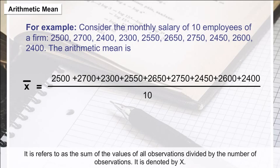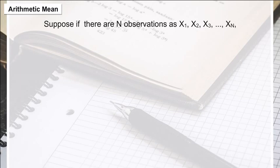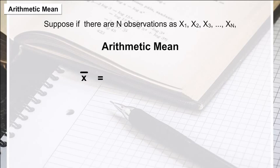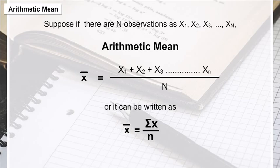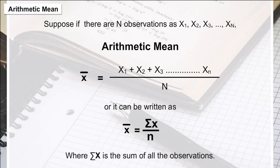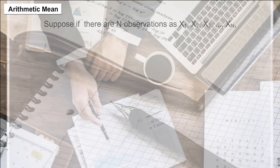Arithmetic mean refers to the sum of the values of all observations divided by the number of observations. It is denoted by x-bar. If there are n observations x1, x2, x3, and so on till xn, then the arithmetic mean is given by: x-bar = (x1 + x2 + x3 + ... + xn) / n, or equivalently, x-bar = summation of x upon n.